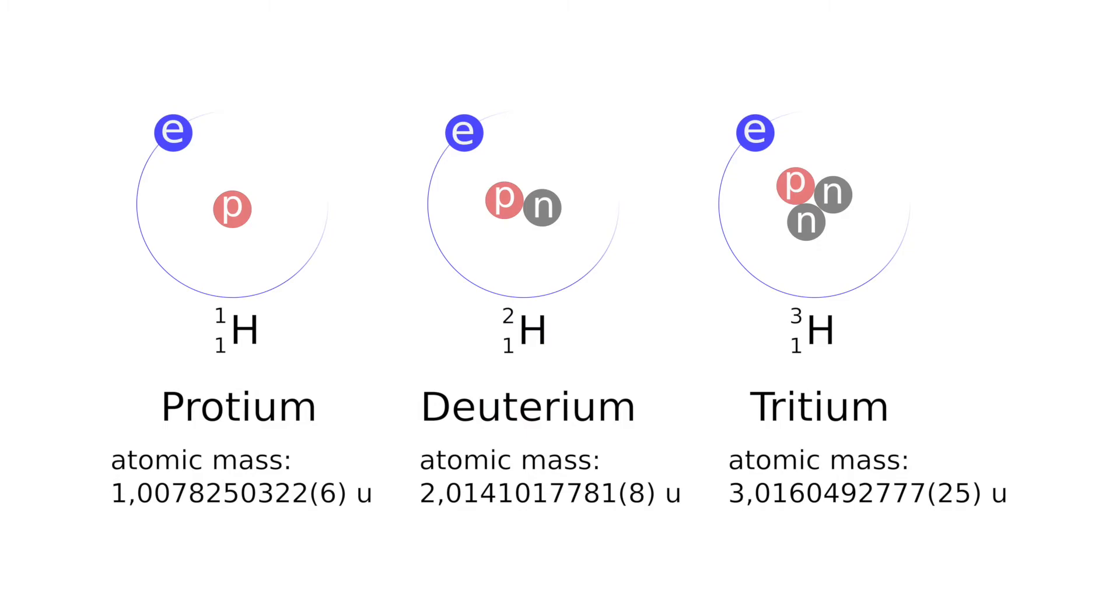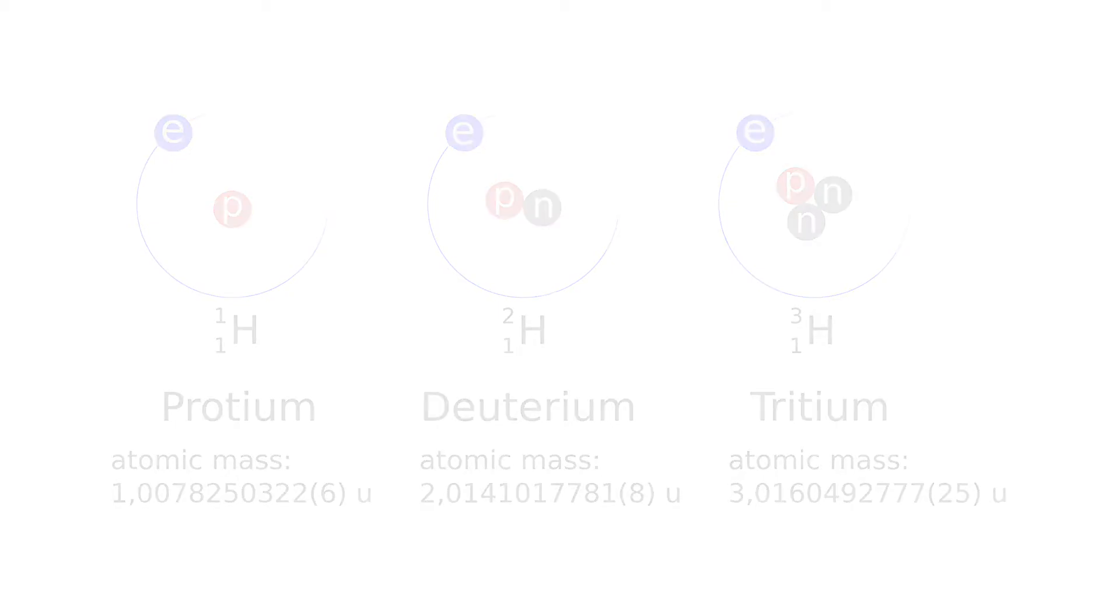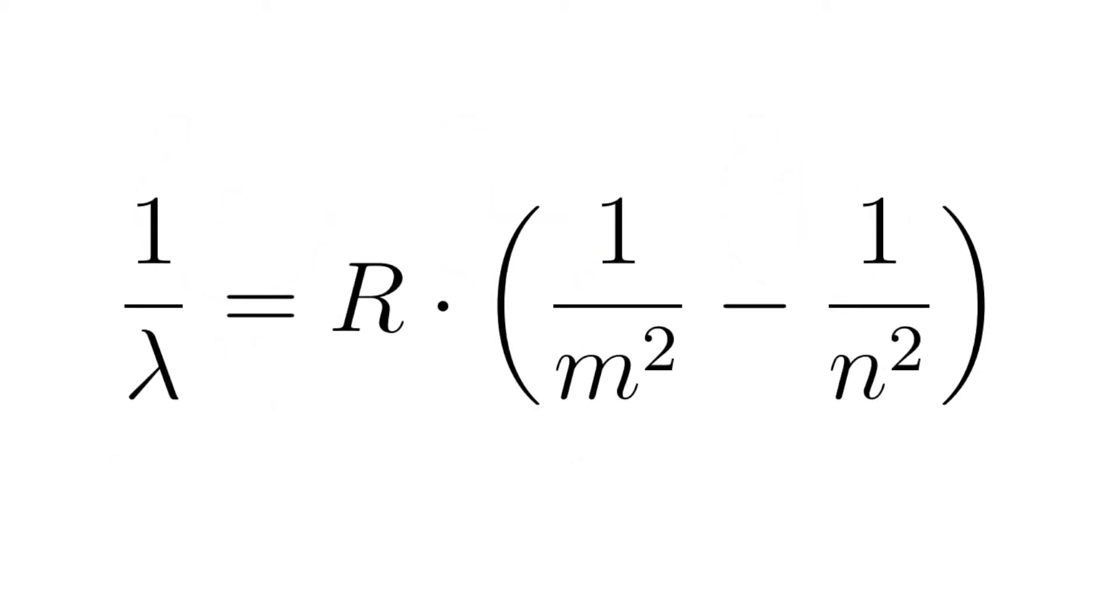Due to the high percentage difference in the mass of the two isotopes, the spectral lines can be observed separately. This can be shown by the Rydberg equation which is given by 1/λ = R × (1/m² - 1/n²).